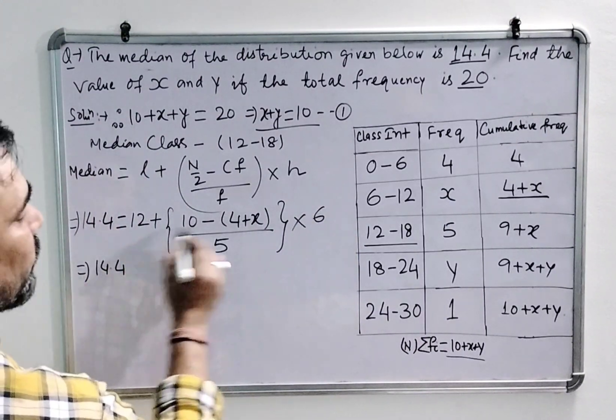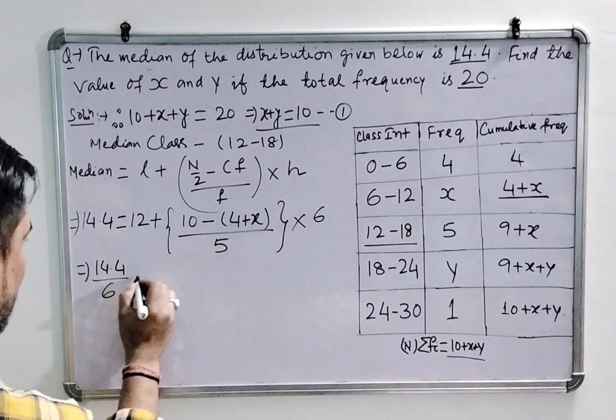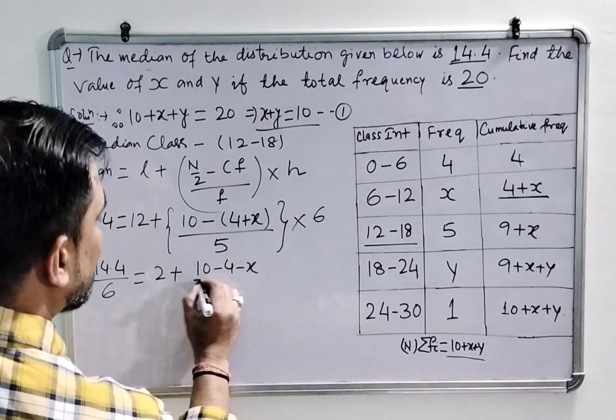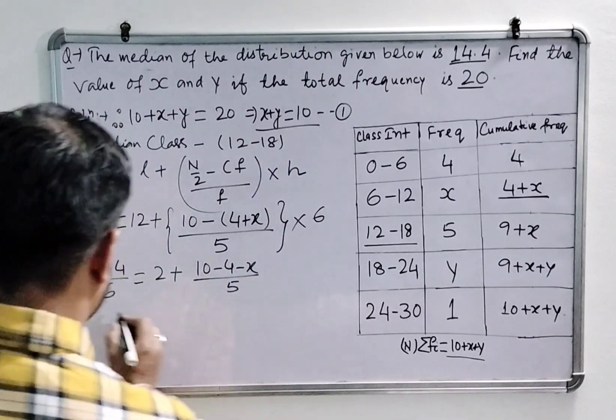Now 14.4, if you take 6h common, divide it by 6. Then 2 plus 10 minus 4 minus x upon 5.